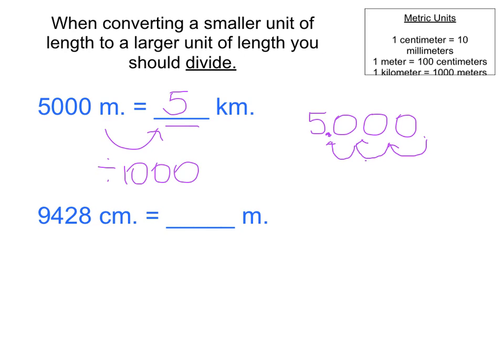The second problem says 9,428 centimeters equals some number of meters. Now, centimeters is a smaller unit of length compared to meters. So once again, I'm going to need to divide. And this time, I'm dividing by 100 because that's how many centimeters are in a meter. To divide by 100, I'll take my 9,428. I know that my decimal point begins at the right. That's where it is right now. And to divide by 100, I'm going to move over to the left because that's dividing by 10. And then I'm going to keep going, divide by another group of 10. And that's going to be a total of 100. Dividing by 10 and dividing by 10 again is dividing by 100. So my decimal point ends up right there, 94.28.